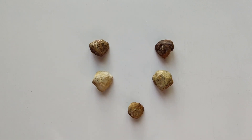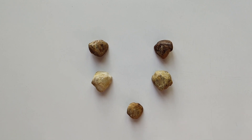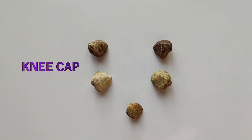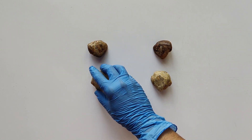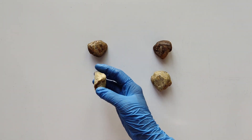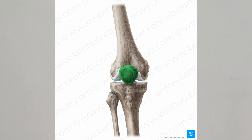Today we'll be learning about the bone — the patella. The patella is commonly called the kneecap. It is situated in front of the lower end of femur, about one centimeter above the knee joint. The patella is a sesamoid bone.